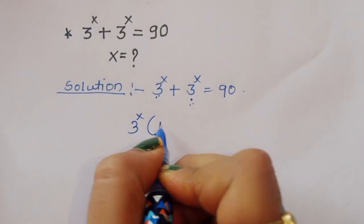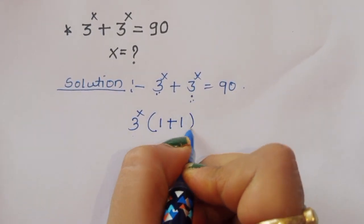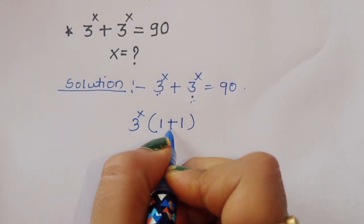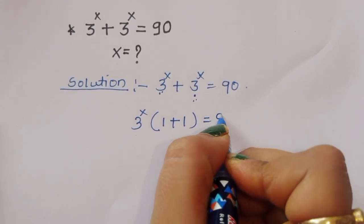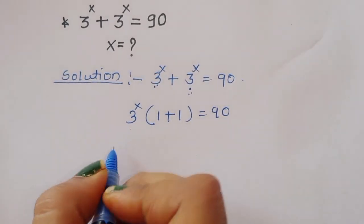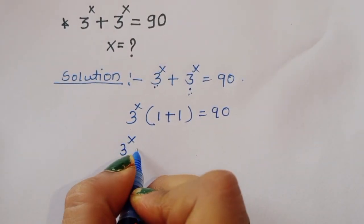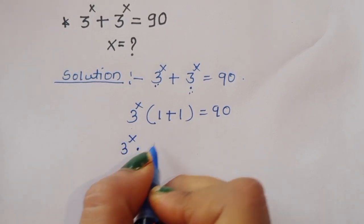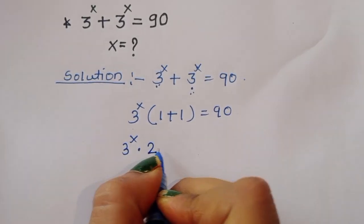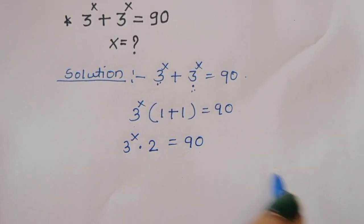Taking 3 power x as common gives us 3 power x times (1 plus 1). So 3 power x plus 3 power x is equal to 90.